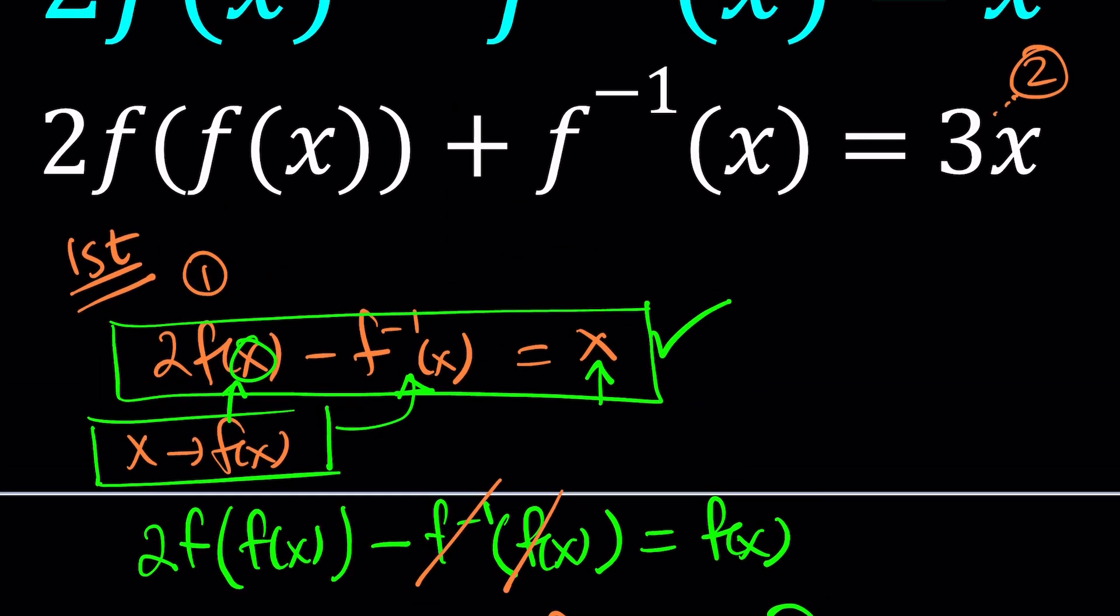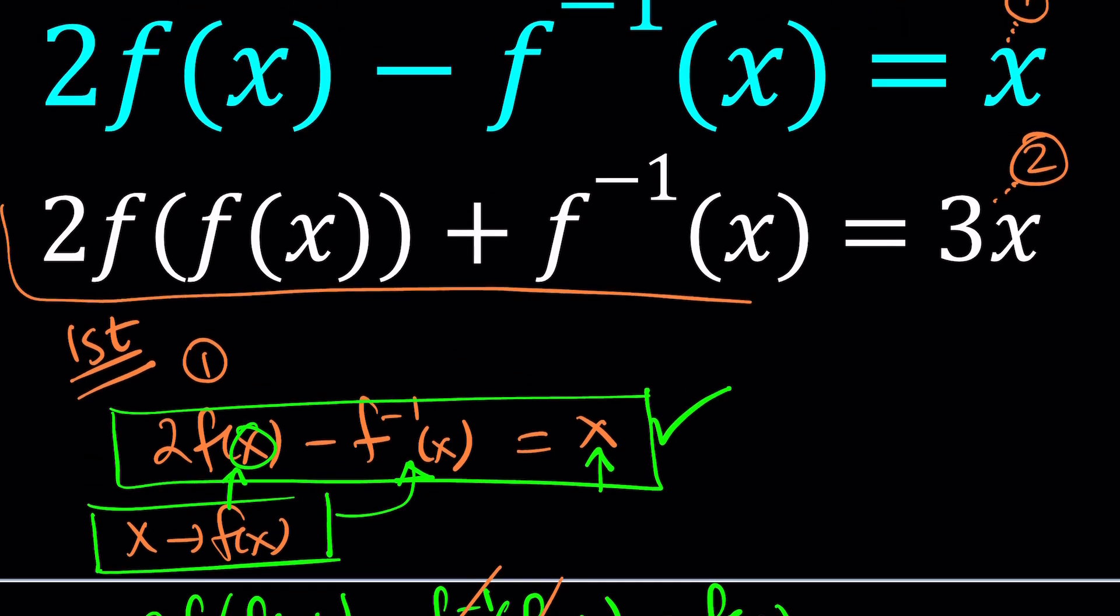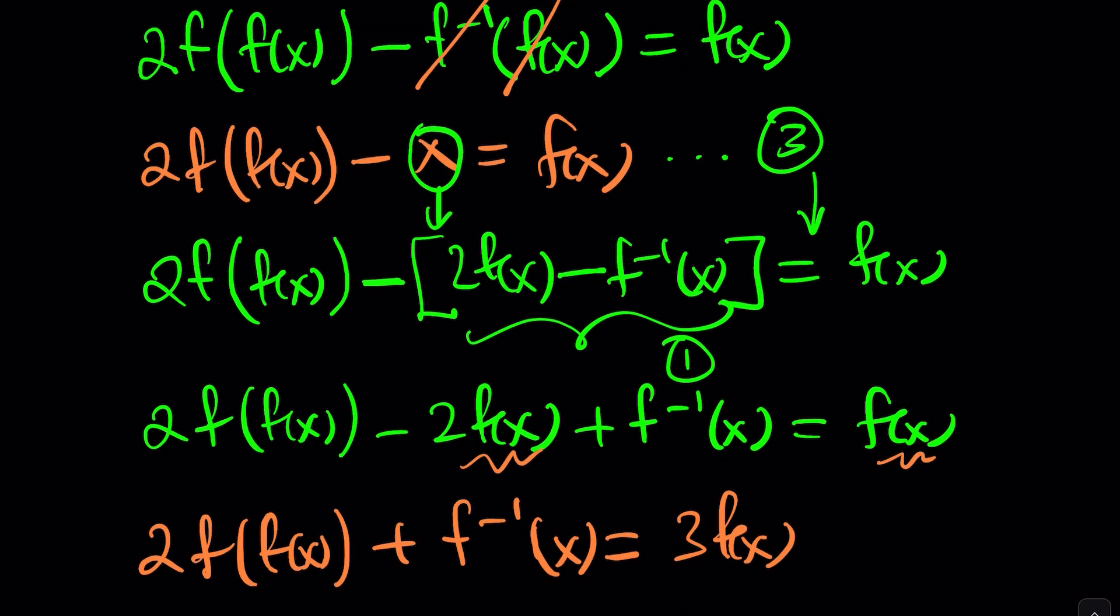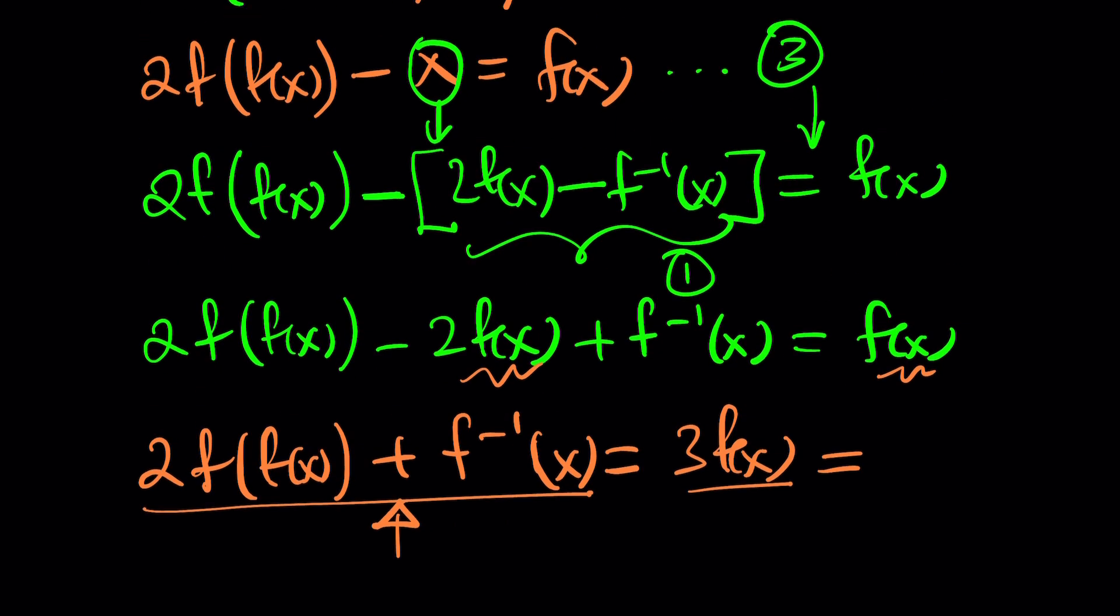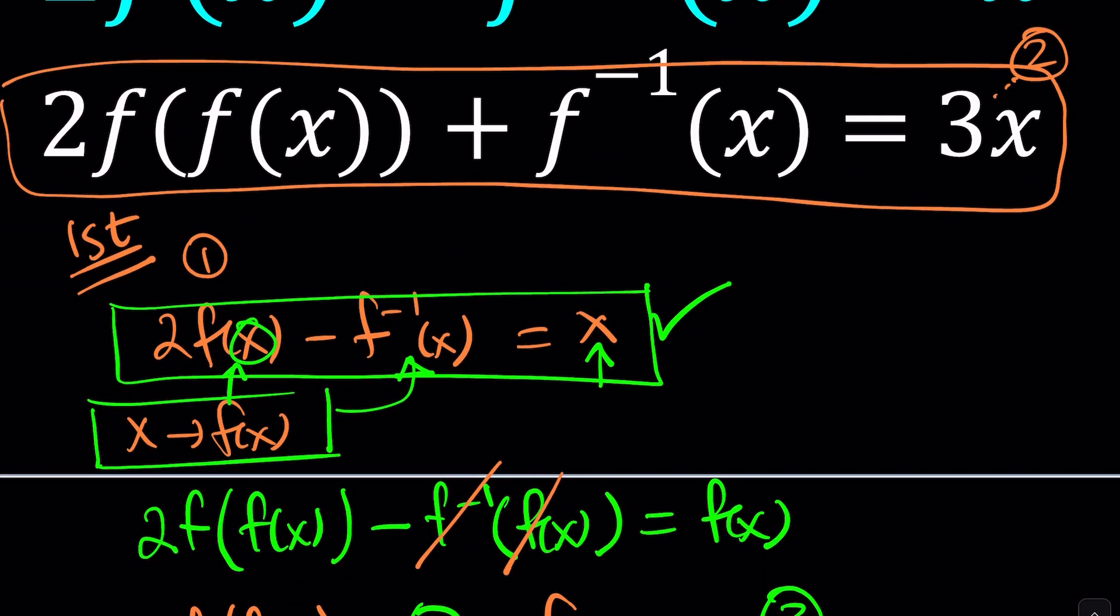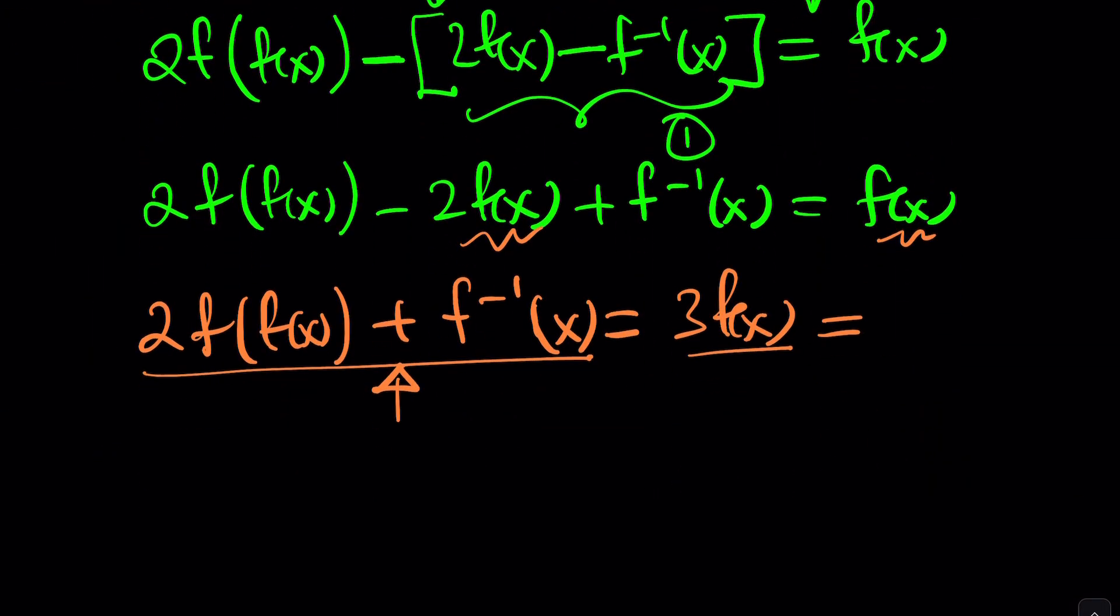But look at this. What are we talking about? On the left-hand side, we have 2 times f of f of x plus f inverse, which is exactly what we have here. So we know what this equals. Therefore, we know what this equals. Wow. Isn't that crazy? Now we can replace the right-hand side with 3x because that's what it is. This is 3x. Therefore, this is 3x. Such a cool solution, don't you think? F of x equals x. Case closed.